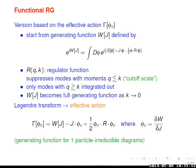The regulator suppresses contributions of modes with momenta q below k, and as we run k down we include their contributions until we've got everything. It's backwards from the normal way we think about cutoffs — k is the cutoff scale, q is the momentum. We're suppressing the low-momentum modes and as we run k down, fewer and fewer get suppressed until we have the full loop contribution.